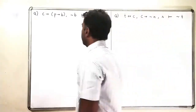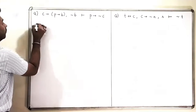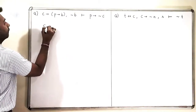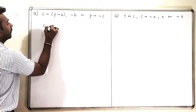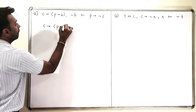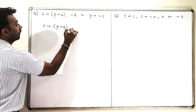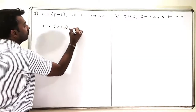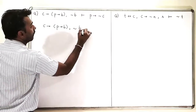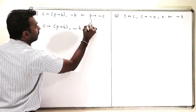Let us see what happens here. I will write out the working premises: C implies (P implies B), negation B, and P.